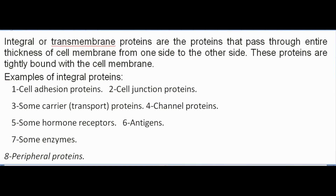Integral or transmembrane proteins are proteins that pass through the entire thickness of the cell membrane from one side to the other. These proteins are tightly bound with the cell membrane. Examples of integral proteins include: cell adhesion proteins, cell junction proteins, some carrier/transport proteins, channel proteins, some hormone receptors, antigens, and some enzymes.